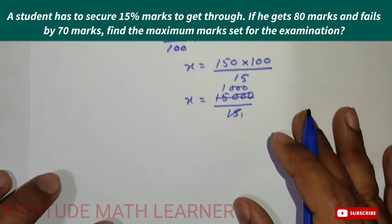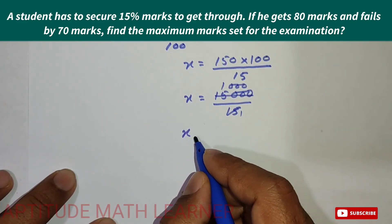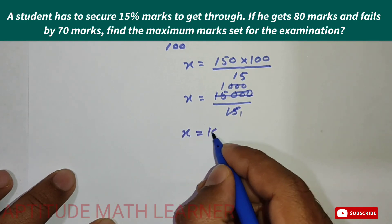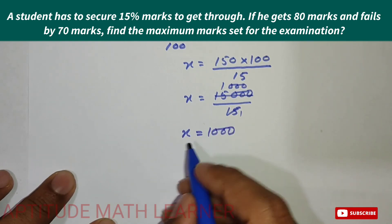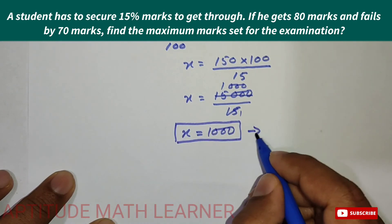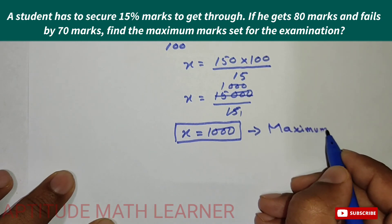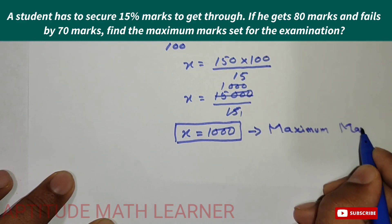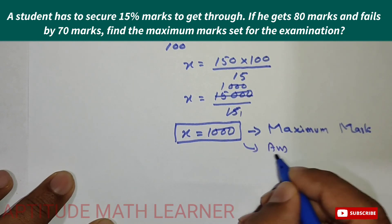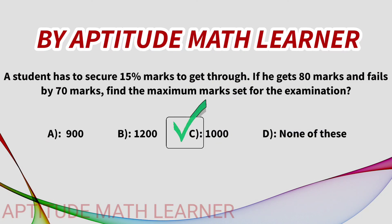So we have found the maximum marks, which we had taken as x. The answer is 1000 — that is the maximum marks. I hope you have completely understood. Thank you very much.